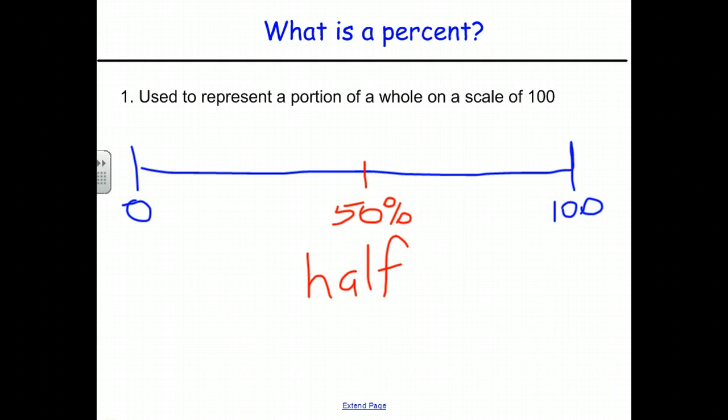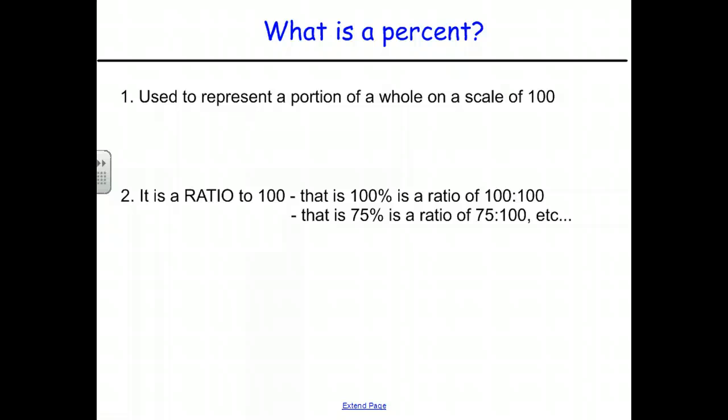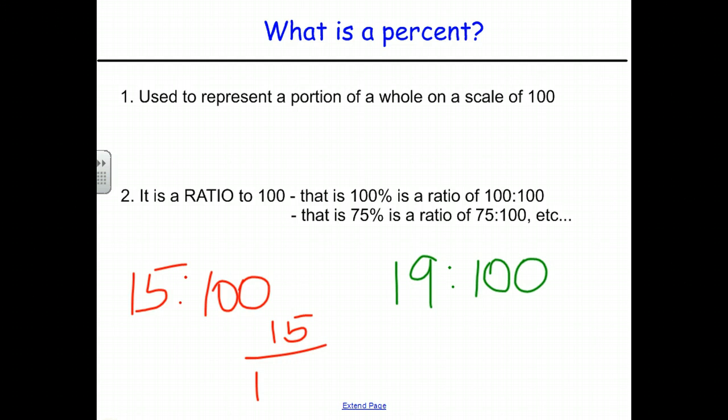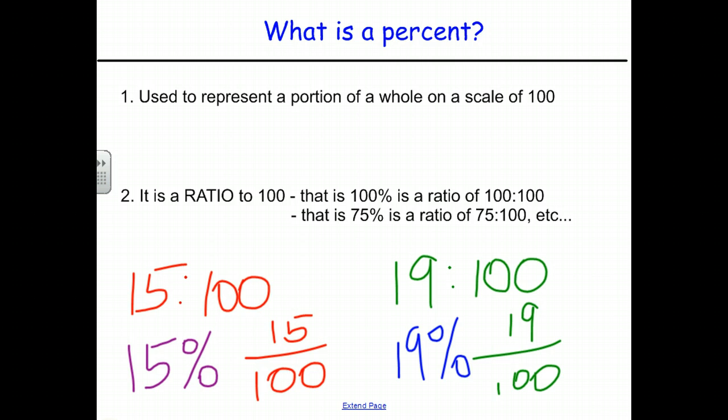But in order to solve and understand problems that involve percents, you have to see it in a different way, which is as a ratio to 100. So, 100% is a ratio of 100 to 100. 75% is a ratio of 75 to 100. 15% is a ratio of 15 to 100. 19% is a ratio of 19 to 100. But more often than not, when we're writing percents, we're going to write them as fractions. 15 out of 100. 19 out of 100. Both of these are percents. The one on the left represents 15%. And the one on the right represents 19%.